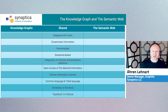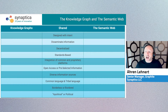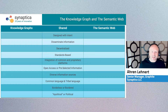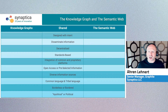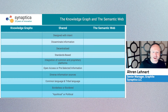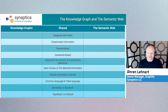Knowledge Graphs, I contend, are the current status of the Semantic Web. They're designed with intent, they disseminate information — all of these shared properties. The Knowledge Graphs and Semantic Web share these features, apolitical or political, maybe not, but they share them.